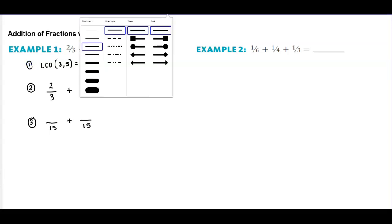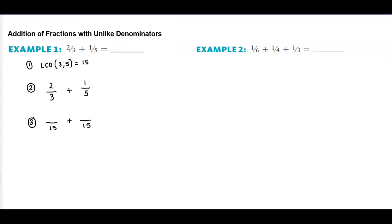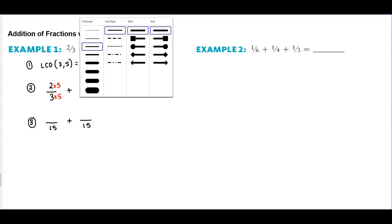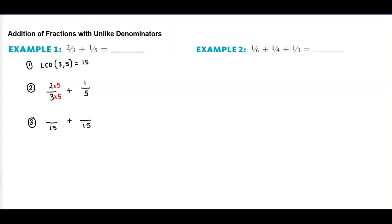Now we're going to ask ourselves: fifteen divided by three is five, so therefore three times five is going to give us fifteen. So we have to do the same thing to the numerator, so two times five is now going to equal ten.